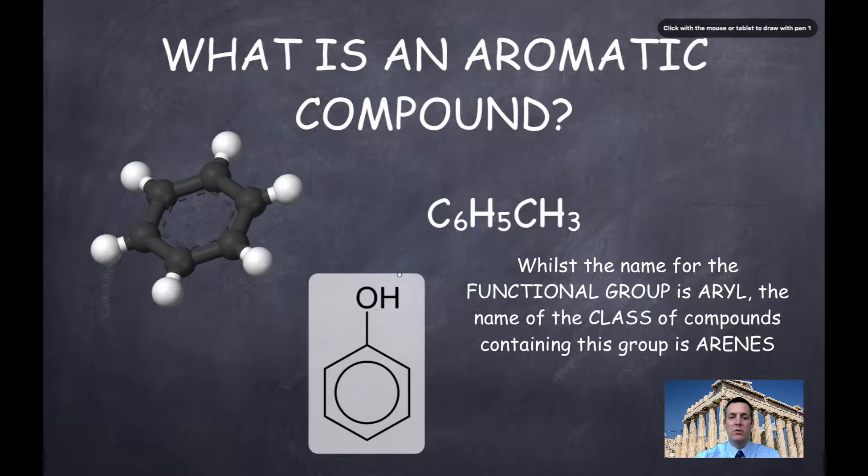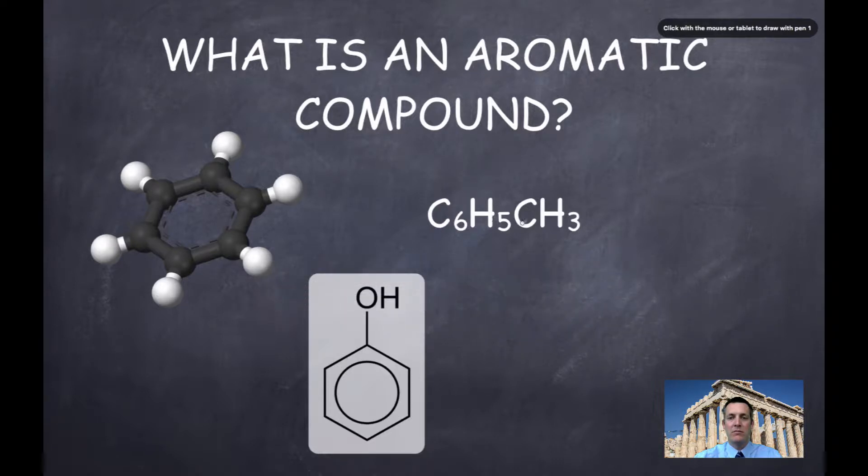We're going to look at this in a bit more detail so don't worry about it too much for now, just sort of showing you what it might look like. And here in a formula we can see that a molecule that has this ring in it, here it's got a CH3 group attached to the ring, but if it has this ring in it there's a really low ratio of hydrogens to carbons.